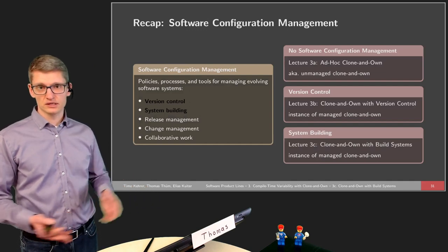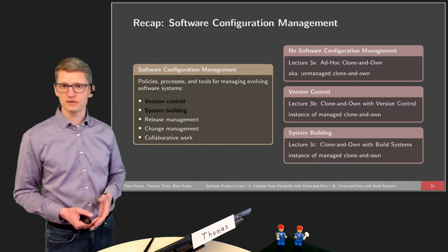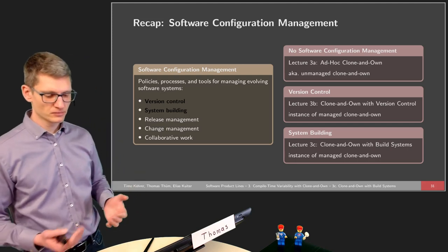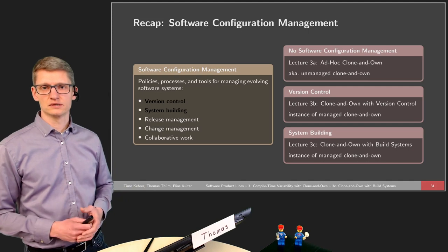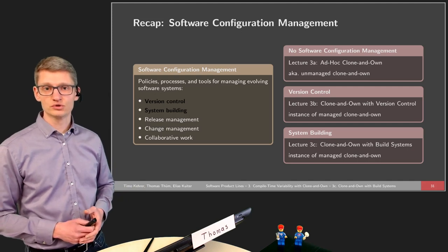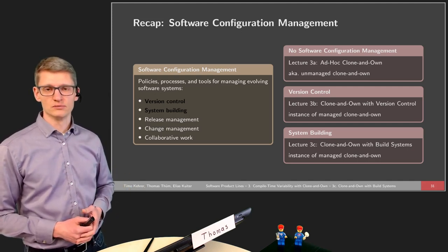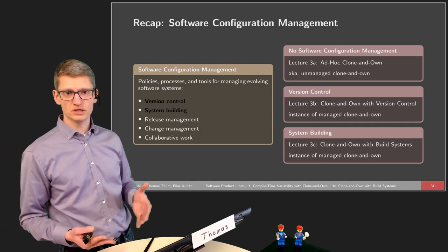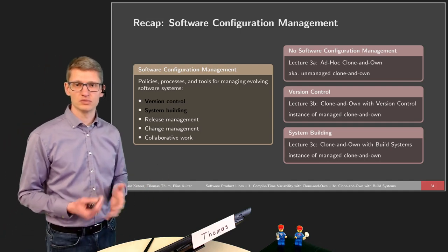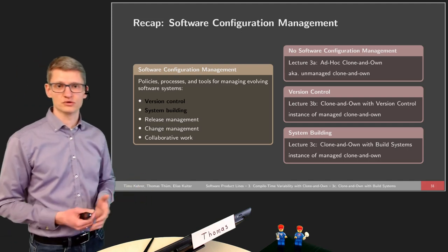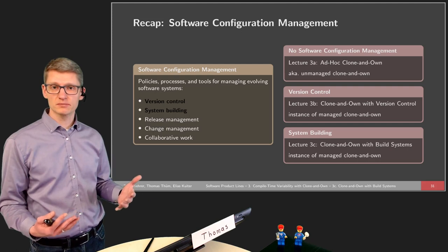As a recap, in the last part we already talked about software configuration management and its different processes, tools, and policies supporting the evolution of software systems. We talked about version control in more detail. In particular, we looked at how managed clone and own can be realized by means of version control. And in this part, we will talk more about system building.